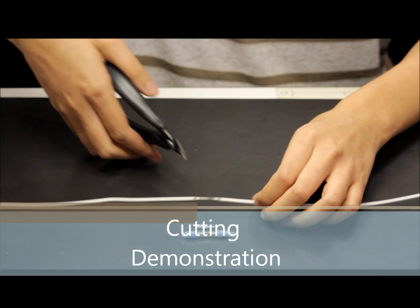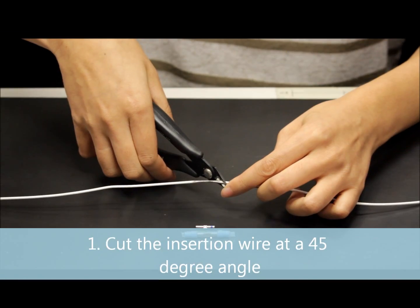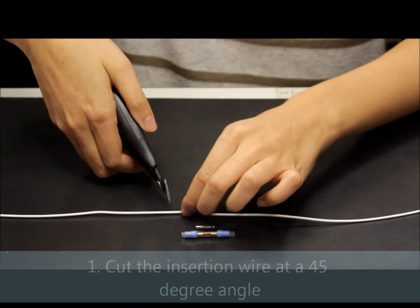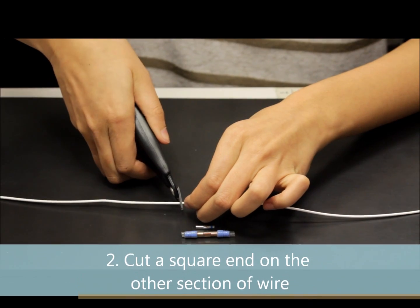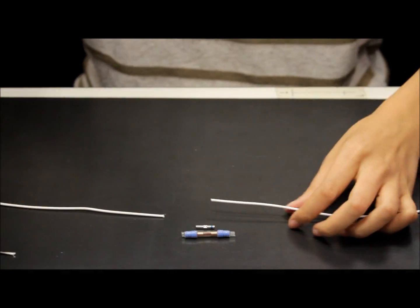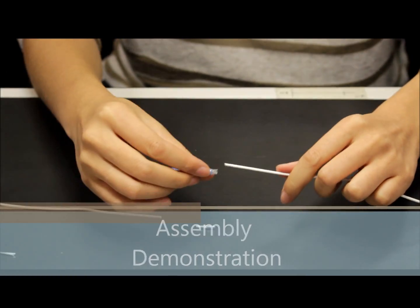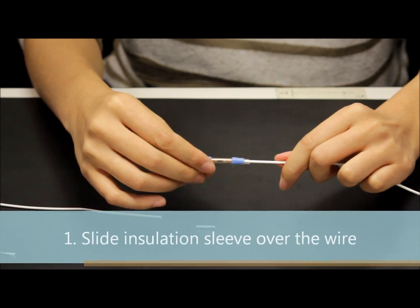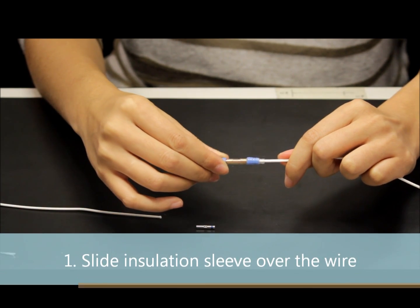Cut the wire at one end of the damaged area at a 45 degree angle. Slide the insulation sleeve onto the wire in a rotating motion.